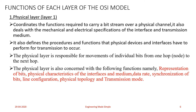The Physical layer data consists of a stream of bits — a sequence of zeros and ones with no interpretation. To be transmitted, the bits must be encoded into signals such as electrical or optical. If your physical medium carries electrical signals, you convert data to electrical signals; if it is an optical fiber, you convert to optical signals for transmission.